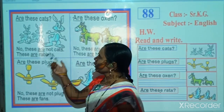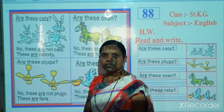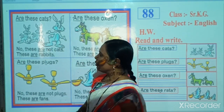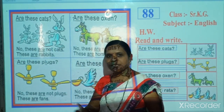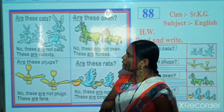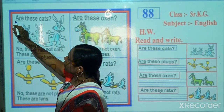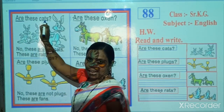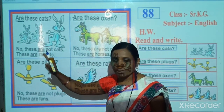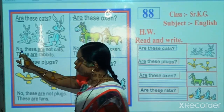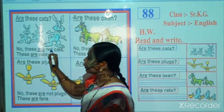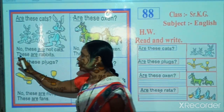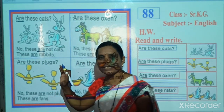Now look here, which picture is this? Correct. This is the picture of rabbits. Now read this question: Are these cats? No, these are not cats. These are rabbits.